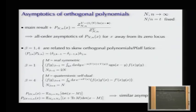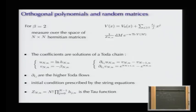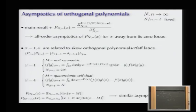For beta=1 and 4, expectation values of characteristic polynomials are related to skew orthogonal polynomials, and the integrable system behind them—found by Adler, Van Moerbeke, and Horozov—is the Pfaff lattice, which is related to the B-version of the Toda lattice (as opposed to the A-version). One can derive similar asymptotics for the Pfaff lattice in the same way. In principle there is also a Riemann-Hilbert formulation for these, but it is very technical and has not been carried out in the literature.